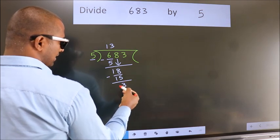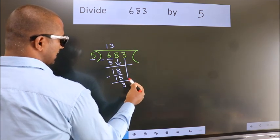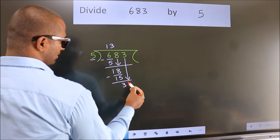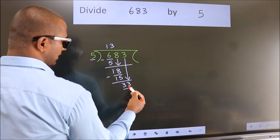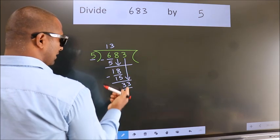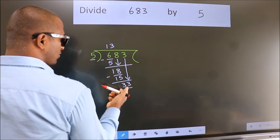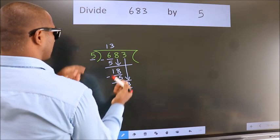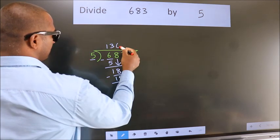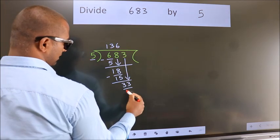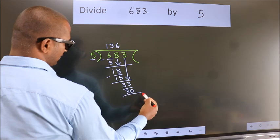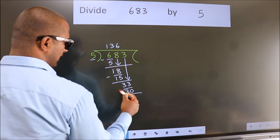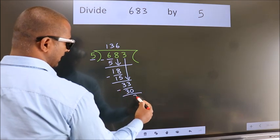After this, bring down the beside number. So 3 comes down, so we have 33. A number close to 33 in the 5 times table is 5 sixes are 30. Now we subtract. We get 3.